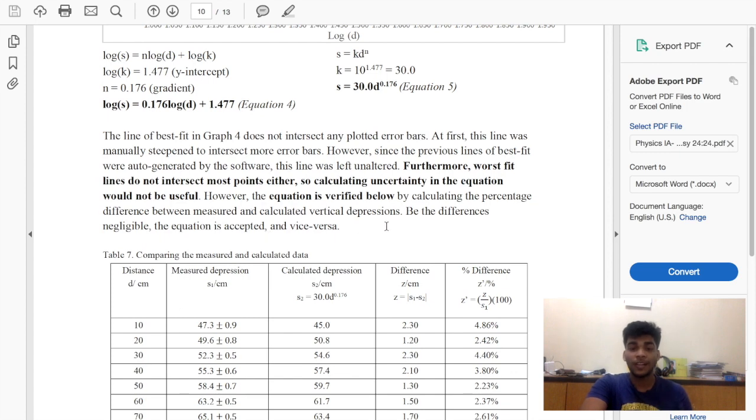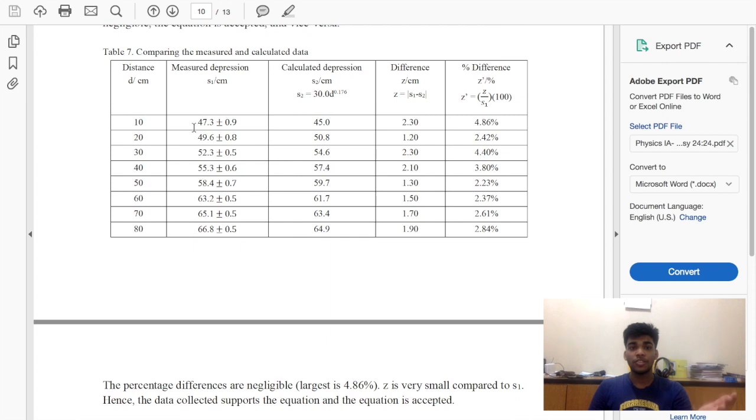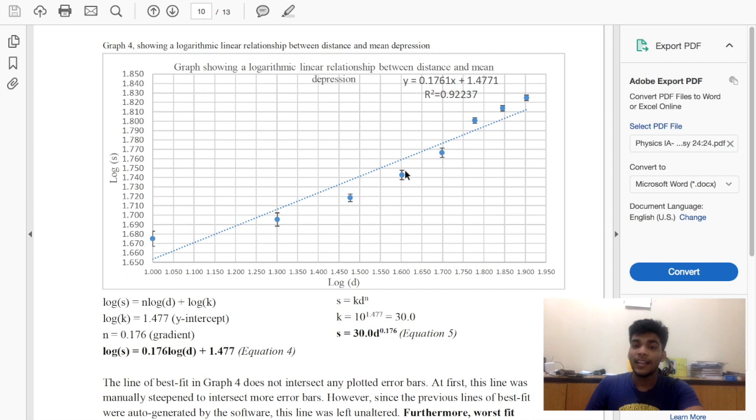This thing looks ultra wrong, but I still got a 24 out of 24 because I explained it right here. The line of best fit does not intersect any plotted bar. However, the equation is verified below by calculating the percentage difference. I took the measured depressions, and now since I had my equation right here, I just put 10, 20, 30, 40 right here and calculated the calculated depression and saw the difference. I had like two to three problems over here: first a cubic relationship which I justified and moved on, and then this graph which was absolute nonsense for my teacher.